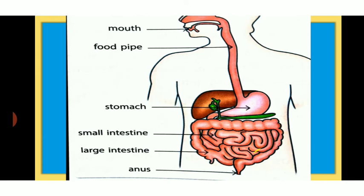In the small intestine, the digestion process is completed. All the useful substances are absorbed by blood vessels. After that, the food is going into the large intestine. In the large intestine, extra water is absorbed from the undigested food.